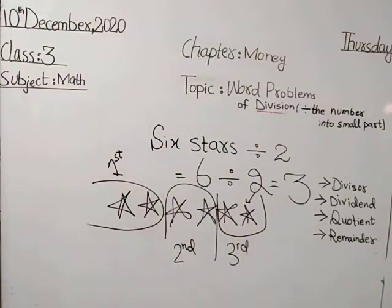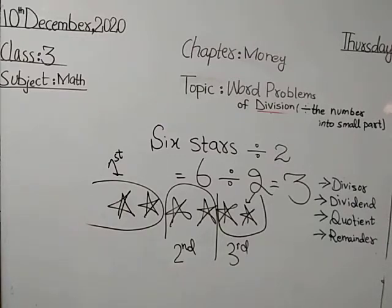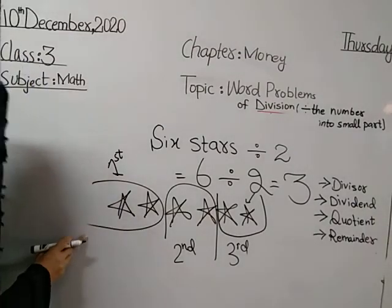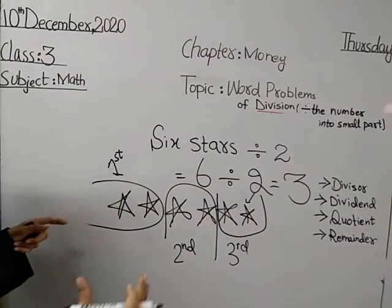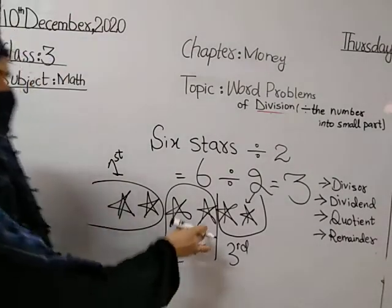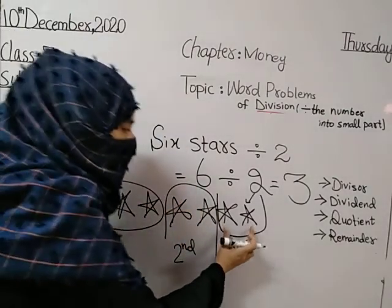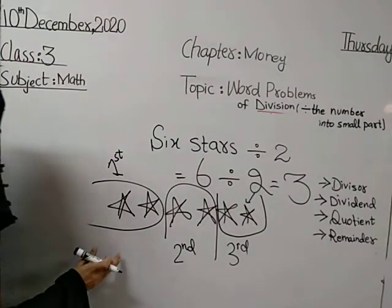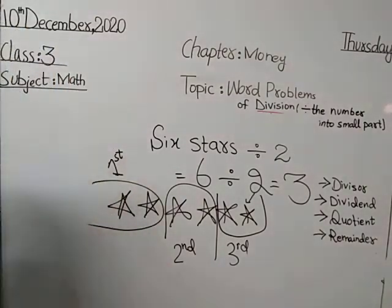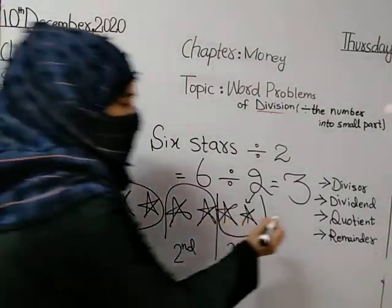First, we have the divisor. What? Two stars. There are two stars in each part. The total parts, one, two, three. Three parts. What is that? Quotient.